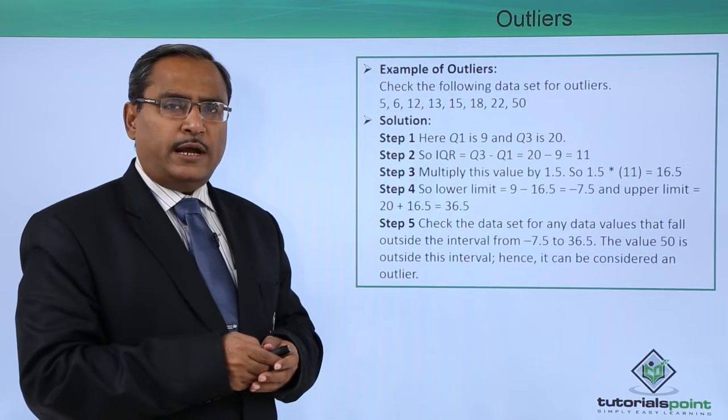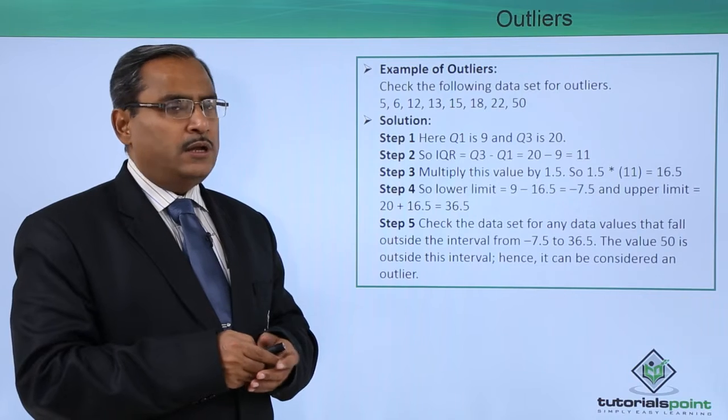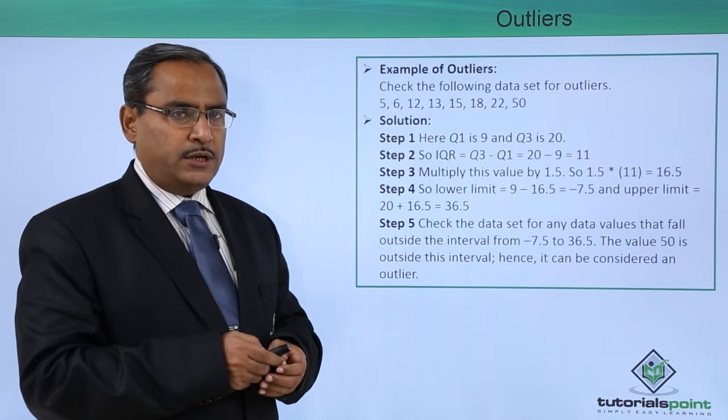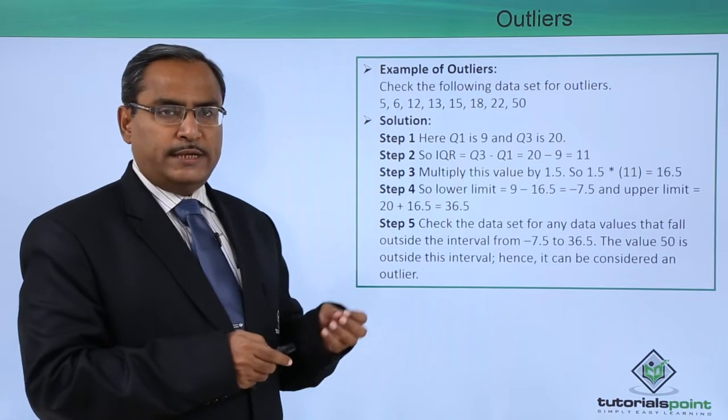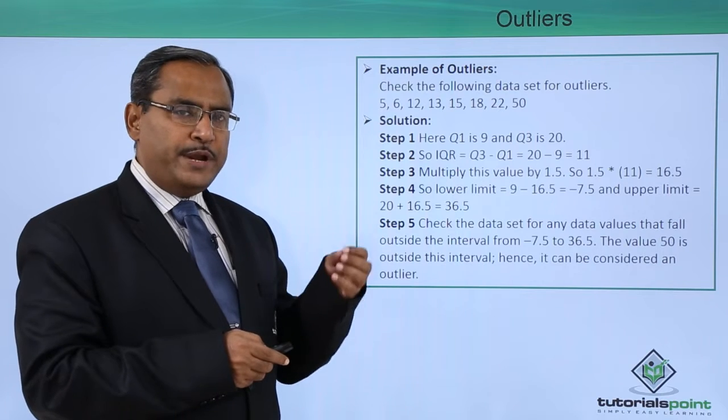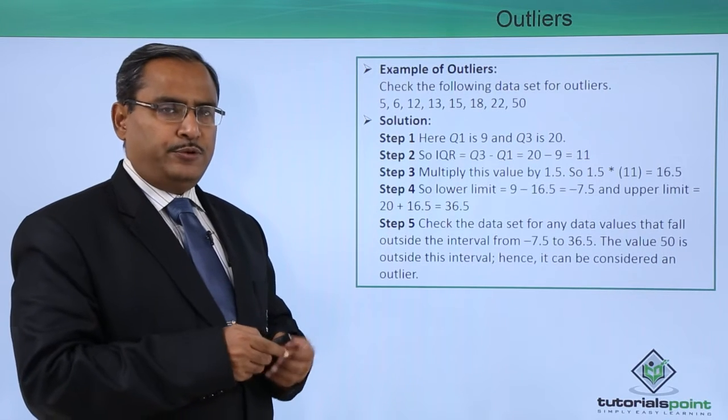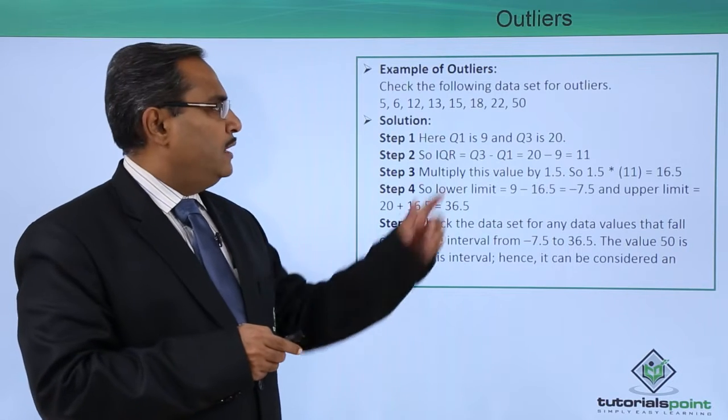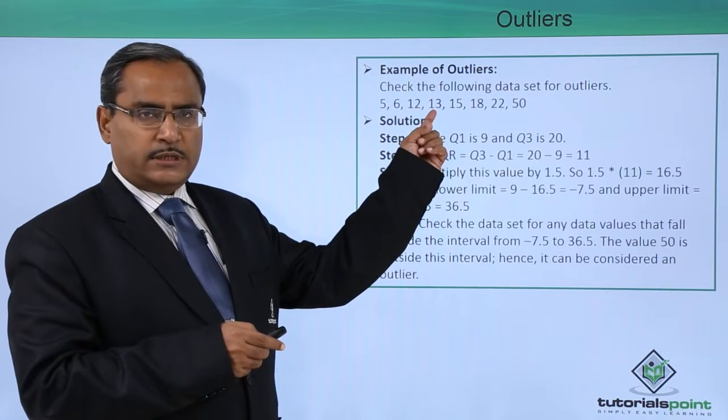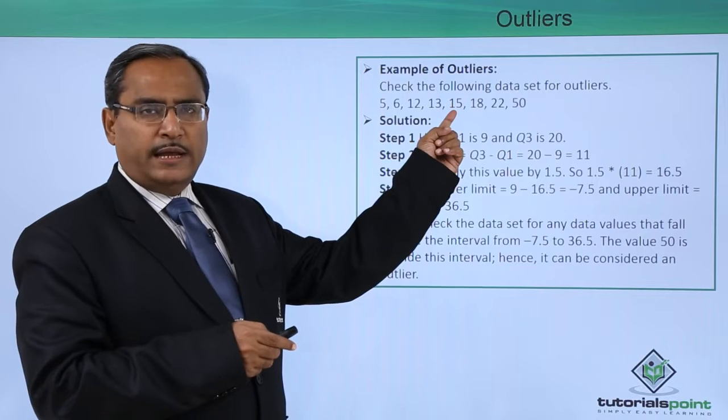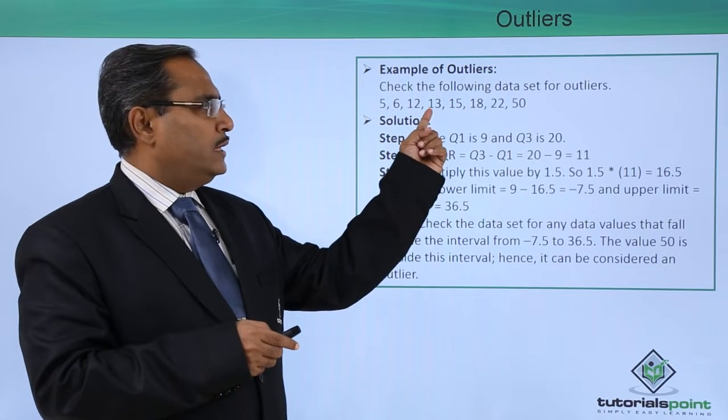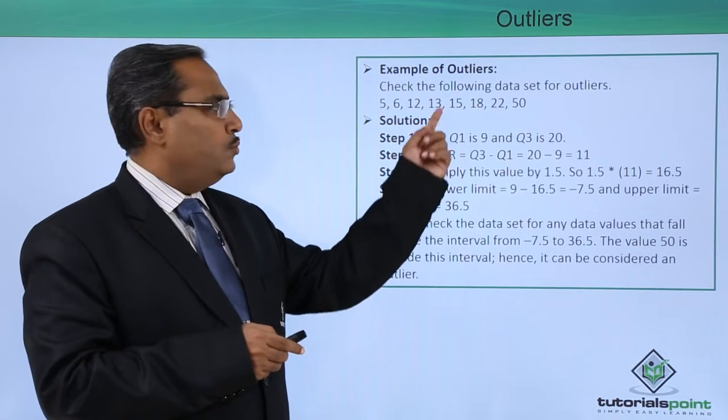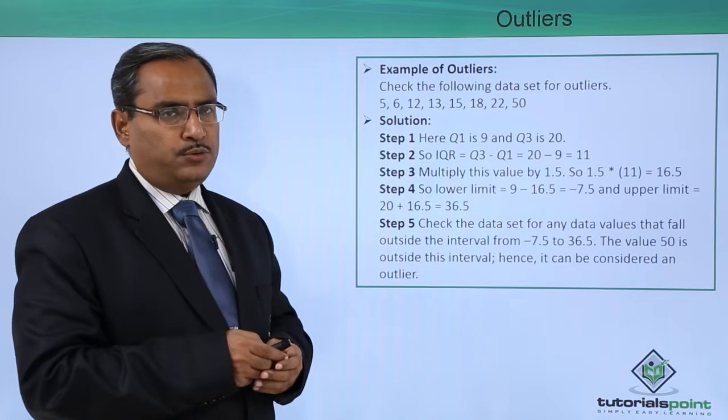As we are having eight numbers of data, and eight is an even number, I cannot get the middlemost data. To calculate Q2, that is the second quartile or the median, I shall have to do the average of data number 4 and data number 5. The fourth data is 13 and the fifth data is 15, so 13 plus 15 divided by 2 equals 14, which will be our Q2.